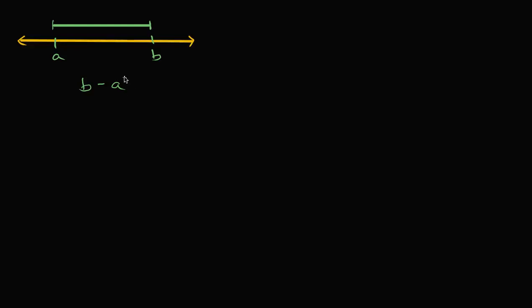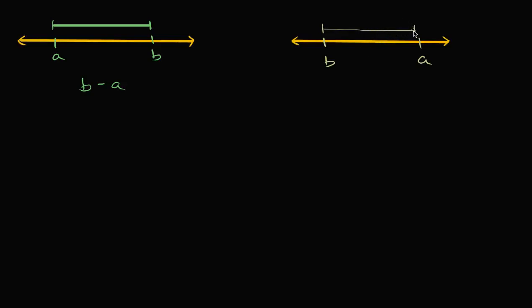What if I knew that A was greater than B? Well, then I would do it the other way around. Let me draw another number line right over here. In this world, I'm going to make A greater than B. So this is B, and that is A. If I wanted to calculate the distance between B and A, now I would take the larger of the two — A — since I want the positive distance, and then I would subtract out the smaller. I would do A minus B.